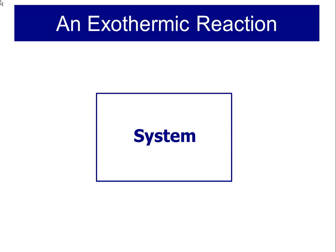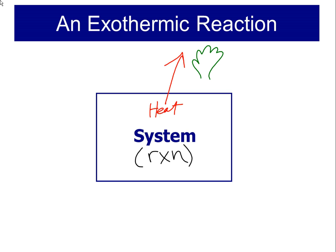The reaction we're referring to, whatever it happens to be, we call it the system. In an exothermic reaction, heat is going to exit the system — it's going to leave the reaction, meaning the reaction itself produces heat. That's why, if I put my hand right here near the reaction, I would feel the heat that the system is giving off.